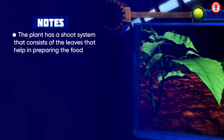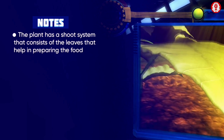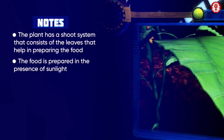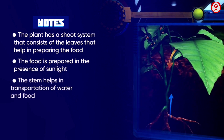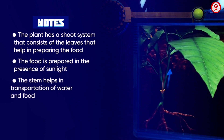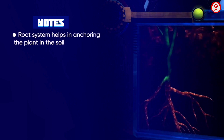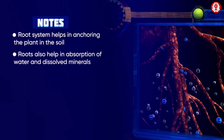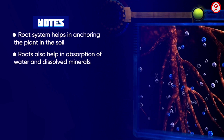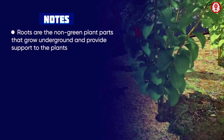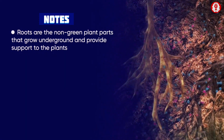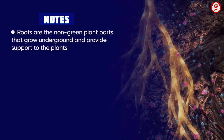The plant has a shoot system consisting of leaves that help in preparing food in the presence of sunlight, and a stem that helps in transportation of water and food. The root system helps in anchoring the plant in the soil and in absorption of water and dissolved minerals. The root is a non-green part of the plant that grows under the ground and helps to anchor and give support to the plant.